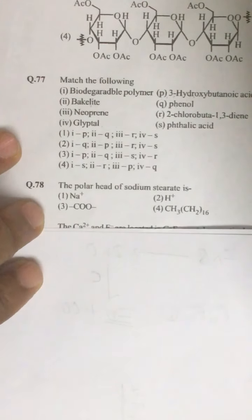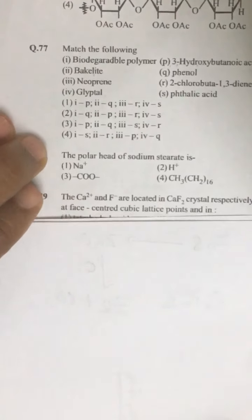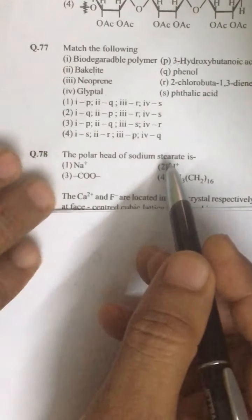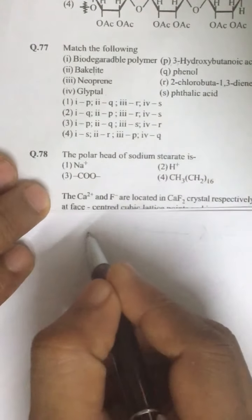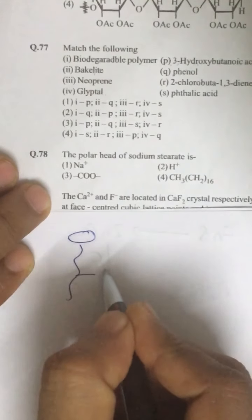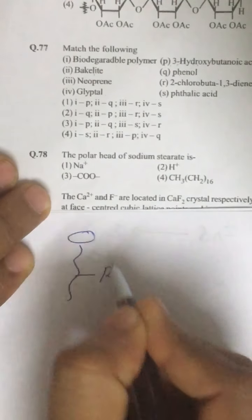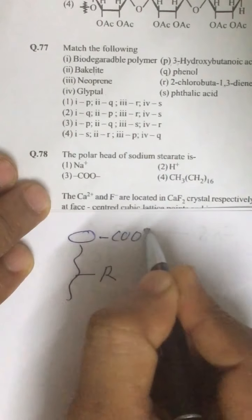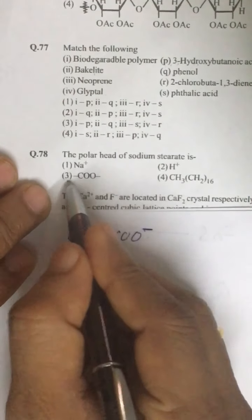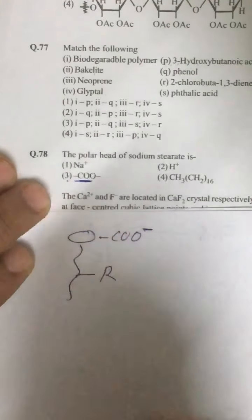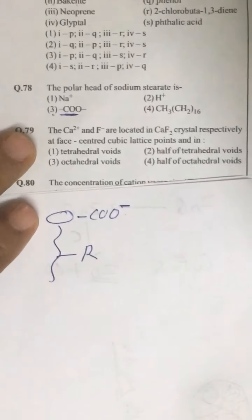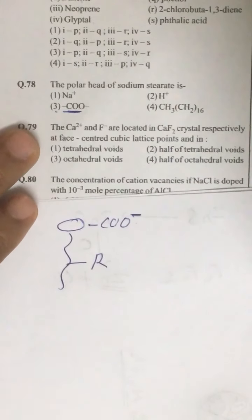Question number 78: sodium stearate — it is a soap. In soap we have an R alkyl group and a COO⁻ head. The negative part is the hydrophilic head.